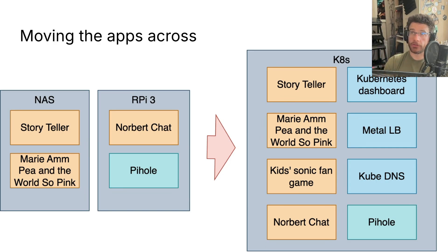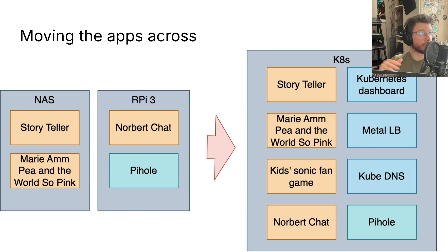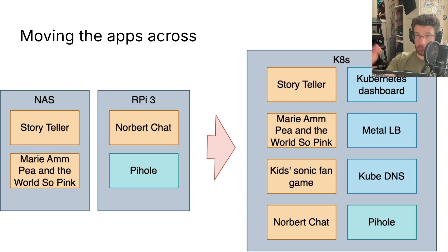On my network, I've got 192.168.1.100 and above assigned by the router. So anything below that — except .1, which is the router itself — I could allow MetalLB to assign those.